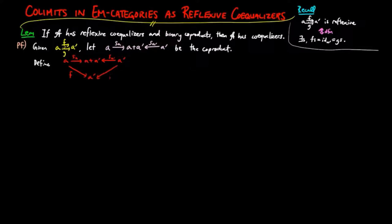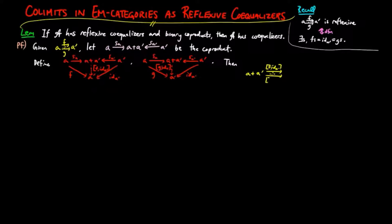and define the morphisms induced by the universal mapping property of the co-product: [F, identity_A'] and [G, identity_A']. Then we see that the inclusion S_A' is a common section of [F, identity_A'] and [G, identity_A'], realizing it as a reflexive pair.